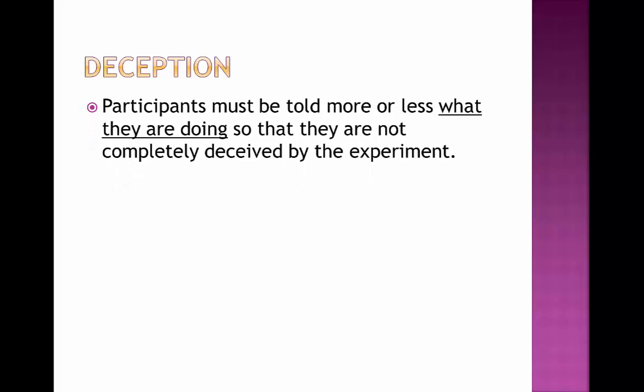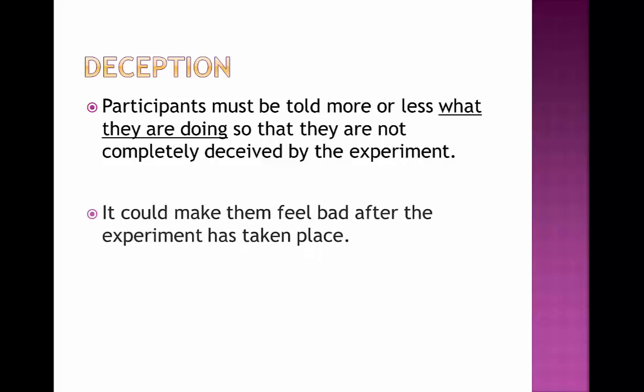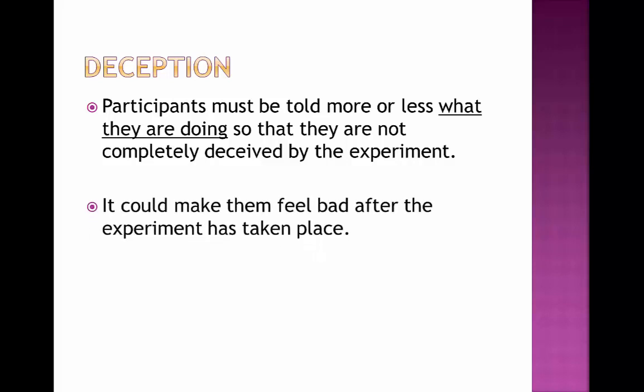The first of which is deception. Participants must be told more or less what they're going to be doing so that it doesn't completely deceive them when doing the experiments. This could make them feel bad after the experiment has taken place if they haven't actually been told completely what they are going to be doing, and therefore have been deceived.